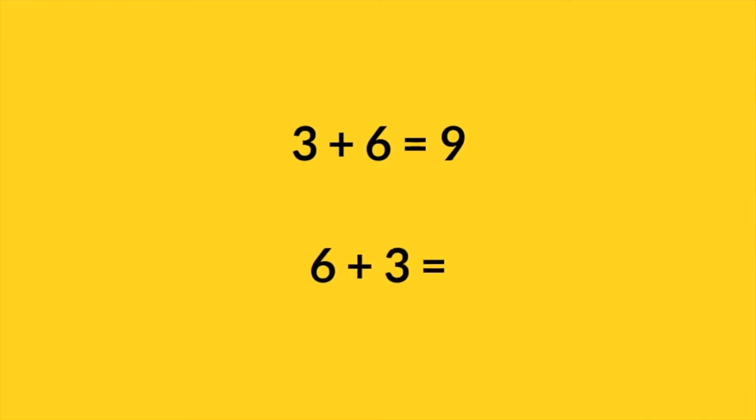Let's consider the commutative property of multiplication and addition — a very important concept across multiple grade levels. In our third grade example, students have already encountered that six plus three equals nine is the same as three plus six equals nine. As the teacher, I could simply explain that multiplication works the same way and that six times three and three times six are equal. I'd expect students to believe me and we'd move on. But if we really want to deepen students' understanding, we need to have a conversation and ask students to explore the concept to reach that deeper level of understanding — that's what math discourse is all about.